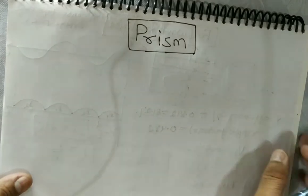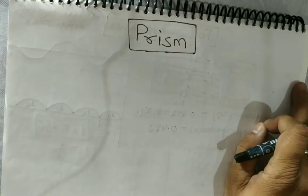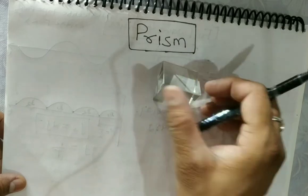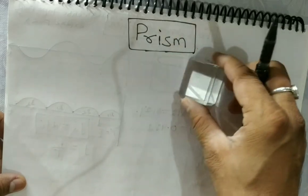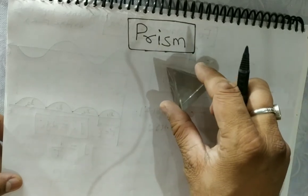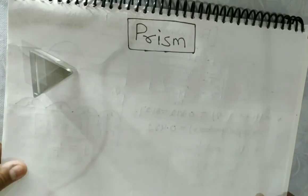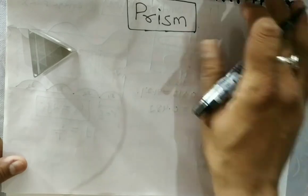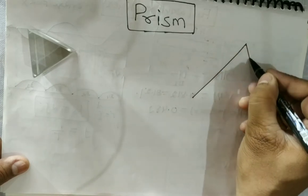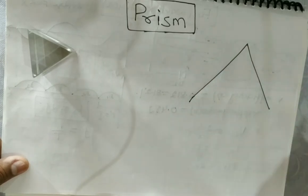Hello guys, I am Ranjan Mishra and today we are going to derive the minimum deviation produced by a prism. You can see this prism — we will do an experiment in our lab for minimum deviation. Now we are going to derive the formula for minimum deviation.